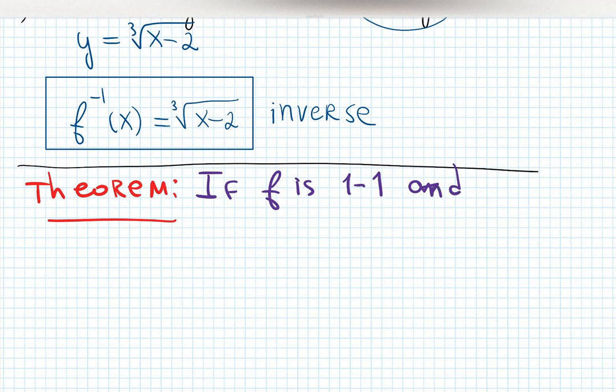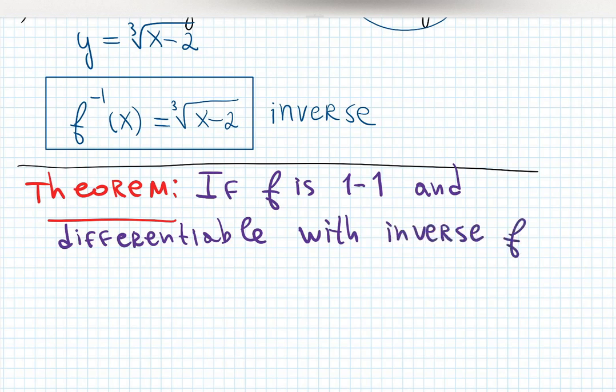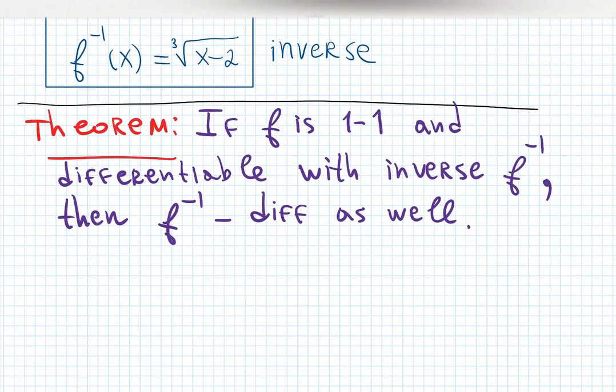Has a derivative means differentiable. If f is one-to-one and differentiable with inverse f^(-1), then f inverse is differentiable as well. That's good because the derivative shows how fast something is changing.